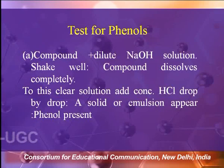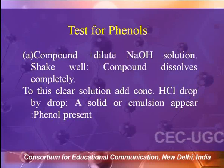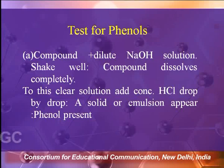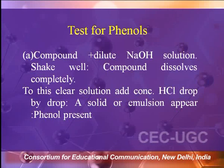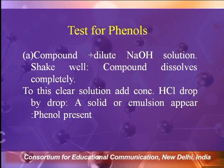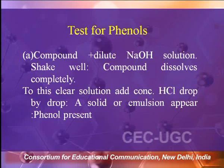How can you detect the presence of a phenolic functional group in a given organic compound? You have to take the compound in a test tube — a small amount. Then you need to add dilute NaOH solution and shake it well. If the compound dissolves completely, to this clear solution you need to add concentrated HCl solution drop by drop. You will see a solid or emulsion if a phenolic functional group is present.